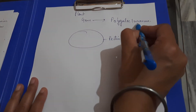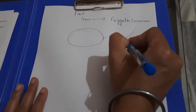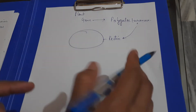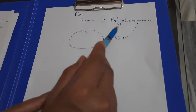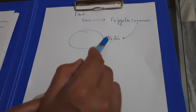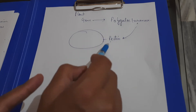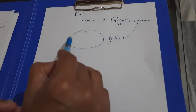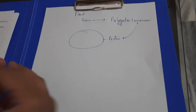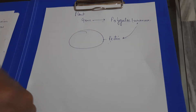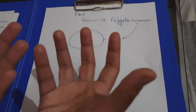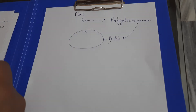The polygalacturonase enzyme causes the pectin to dissolve. When it acts on the pectin, the outer shell of the tomato becomes soft. Once it becomes soft, the tomato will ripen and even over-ripen.